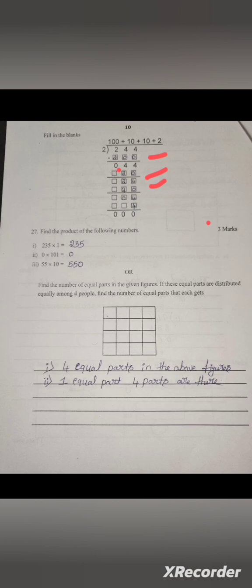Find the product of the following numbers. 235 into 1, answer will be 235. Any number multiplied by 1 gives the same number. Second, any number into 0 equals 0. Third, 55 into 10: 55 times 1 is 55, add one 0, answer is 550.